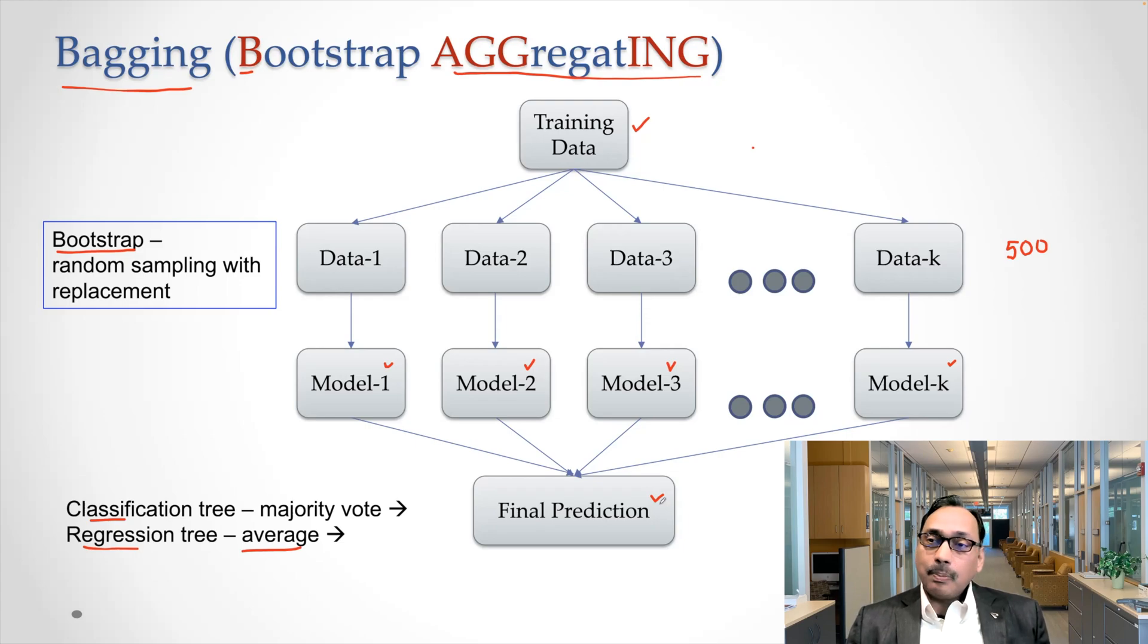Our prediction is based not on just one tree, but it's based on a lot of trees. So hopefully those results will be better. So one thing you will notice in this structure is that data one has nothing to do with data two. Data two has nothing to do with data three or data one.